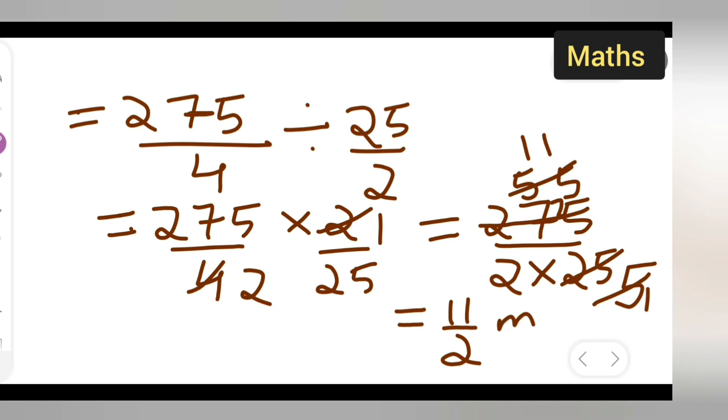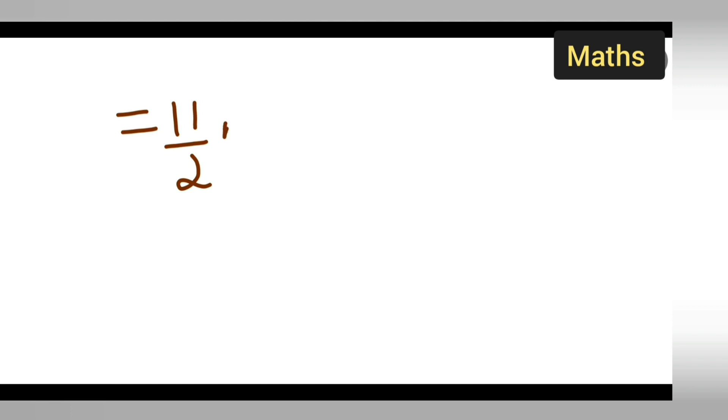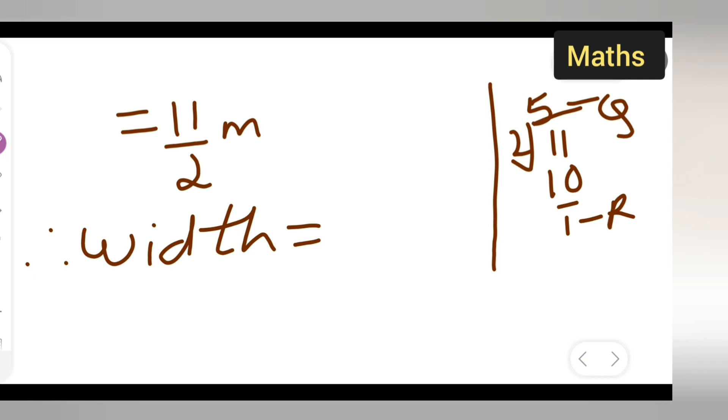We got 11 over 2 meters. Now we need to convert this to mixed fraction form. Divide 11 by 2: 2 times 5 is 10, with remainder 1. Therefore, width equals 5 and 1/2 meters. Finally, we have found the width.